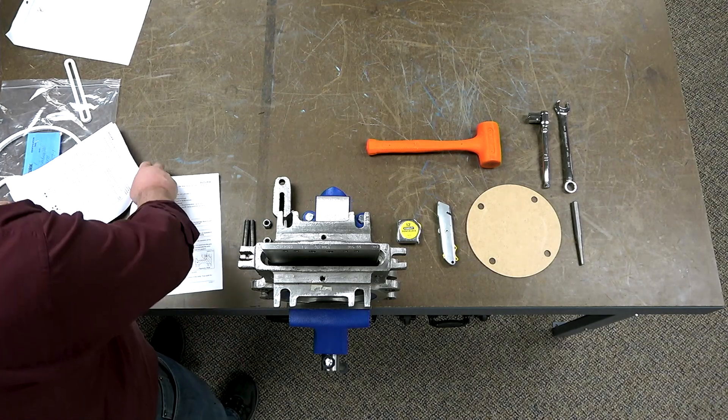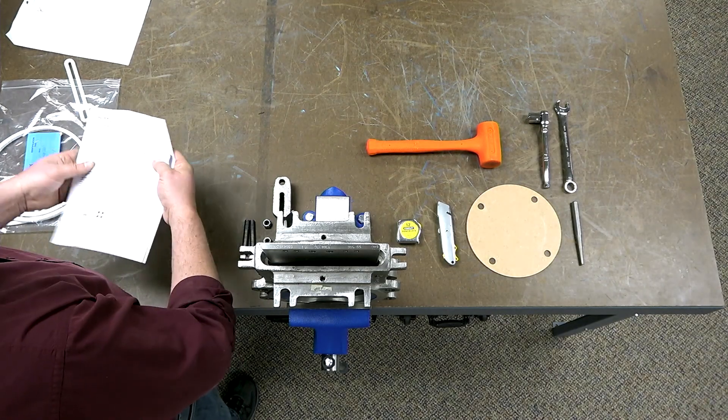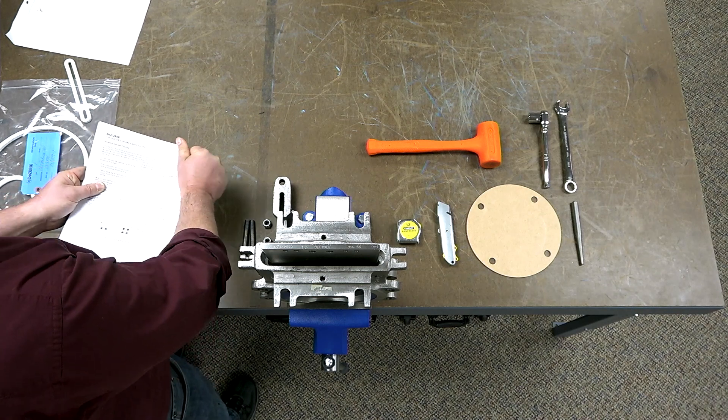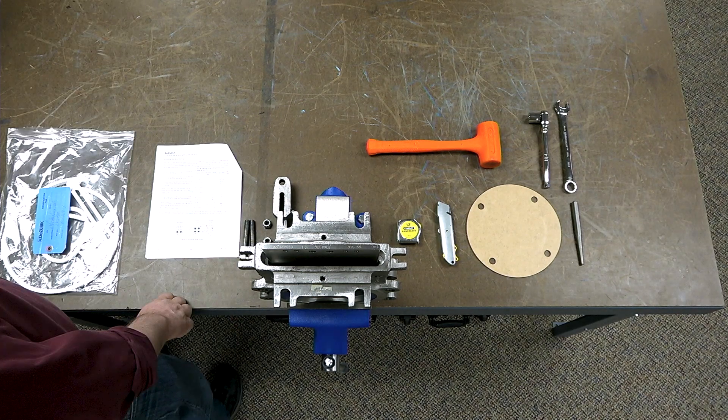We will be using PTFE braided packing with an energized packing cord and an anti-extrusion ring in this video, but the procedure is similar for all packing options.